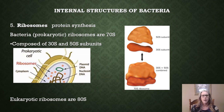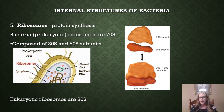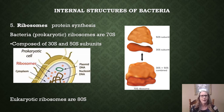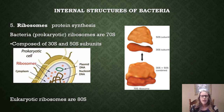Another internal structure of bacteria are ribosomes. Ribosomes function in protein synthesis, more specifically in translation. Ribosomes read strands of messenger RNA and make proteins. Ribosomes come in two pieces called subunits — there is a large subunit and a small subunit.